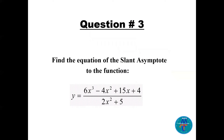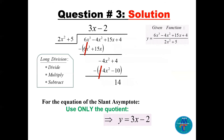Question number three: find the equation of the slant asymptote of y = (6x^3 - 4x^2 + 15x + 4) / (2x^2 + 5). To find the slant asymptote, we need the quotient after dividing the numerator by the denominator using long division.